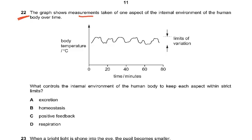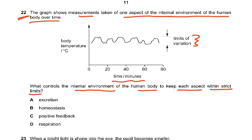Question number 22: The graph shows measurements taken of one aspect of the internal environment of the human body over time. These are the limits of variation and then there's the body temperature and then the time in minutes. What controls the internal environment of the human body to keep each aspect within strict limits? So blood glucose, blood water content, temperature - how is that kept constant?